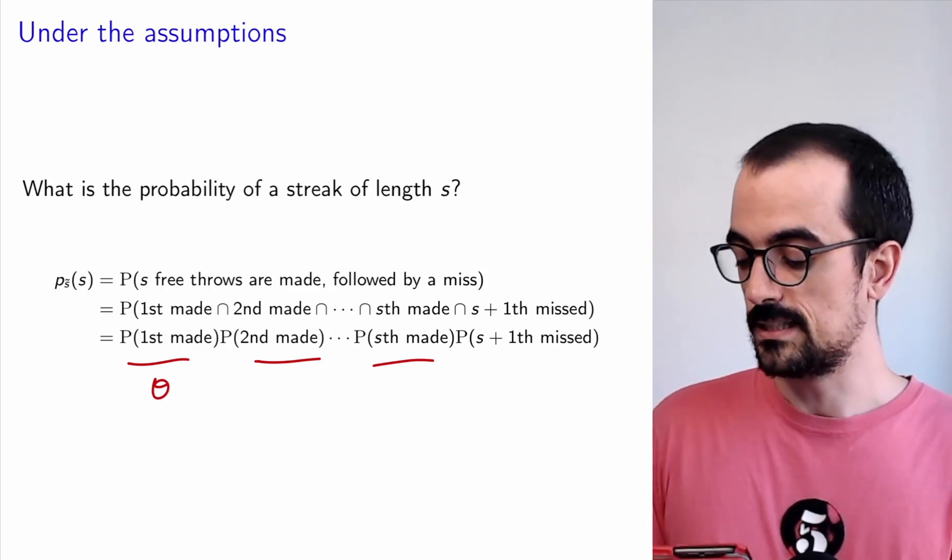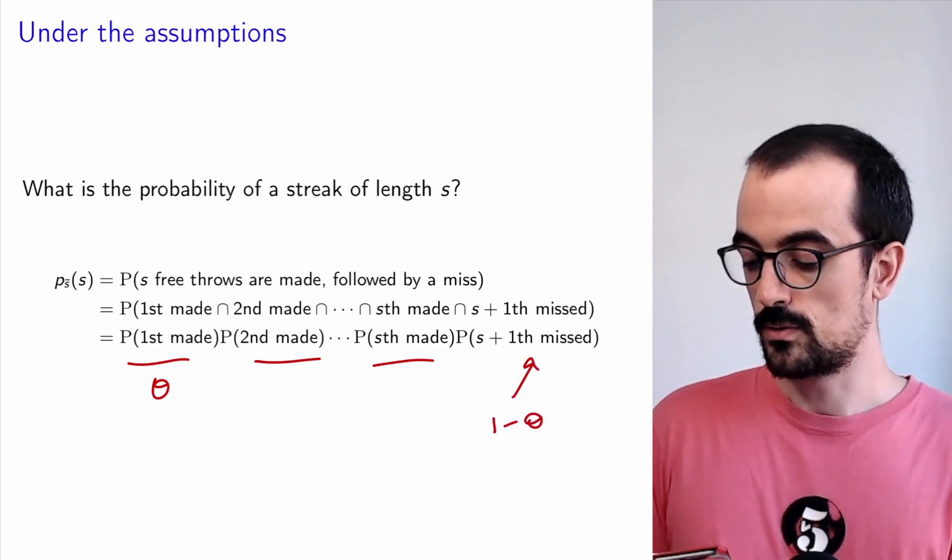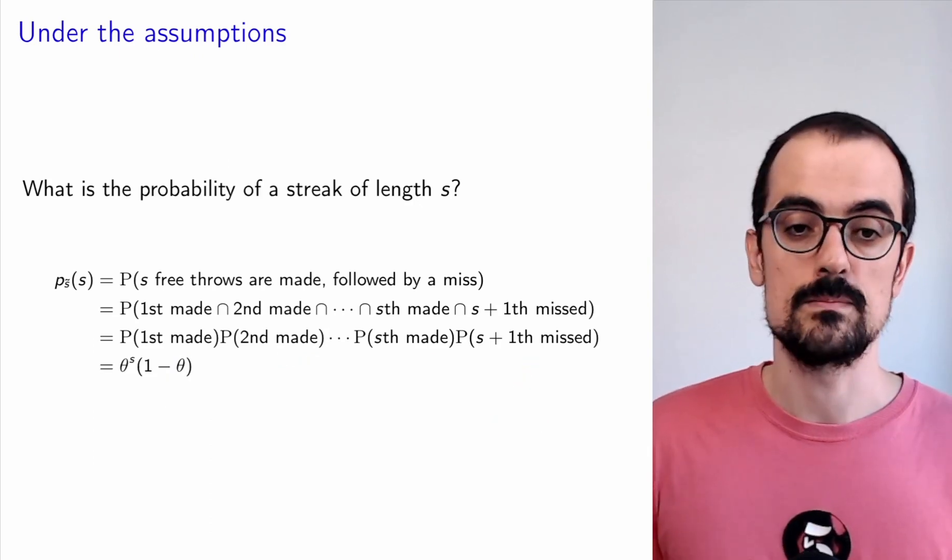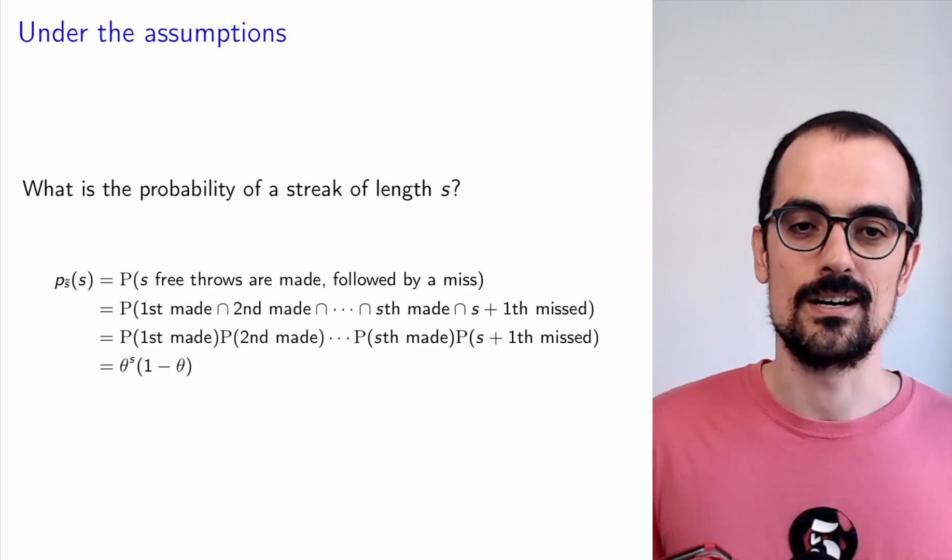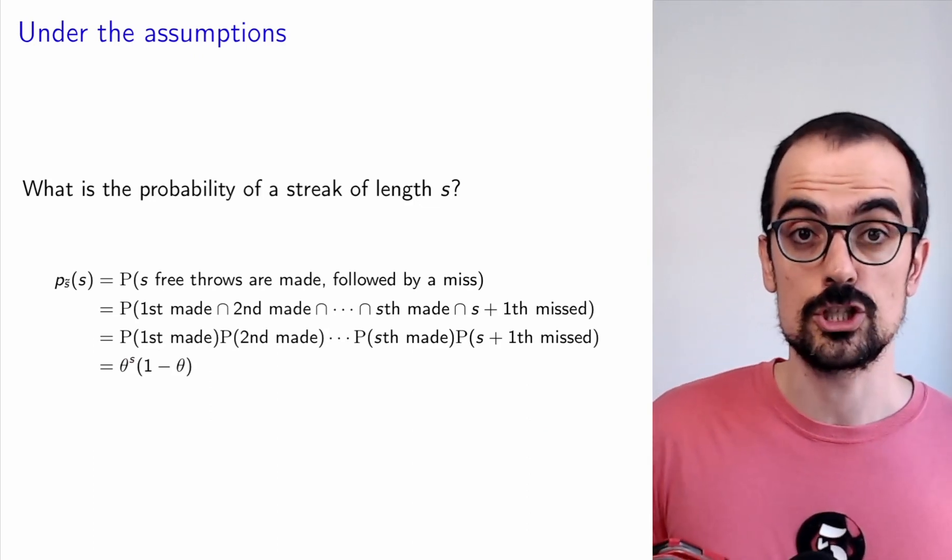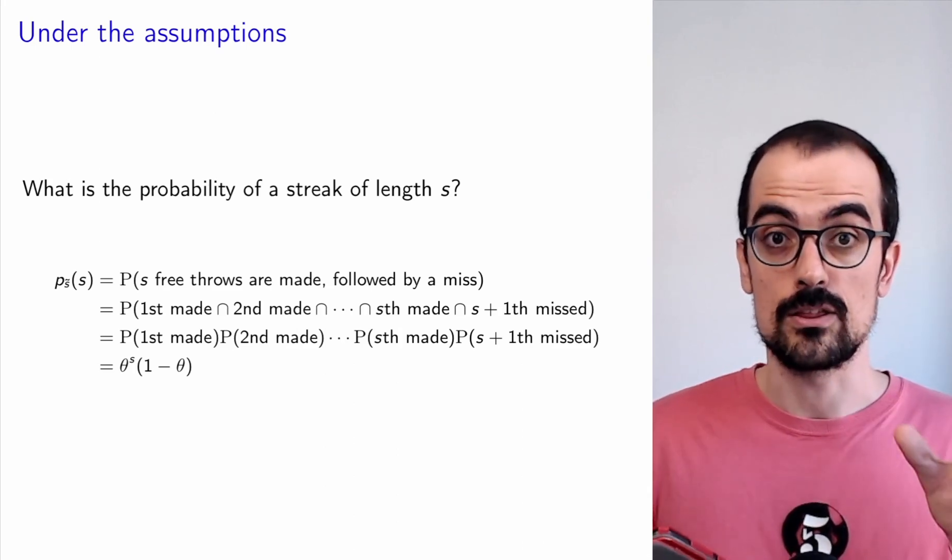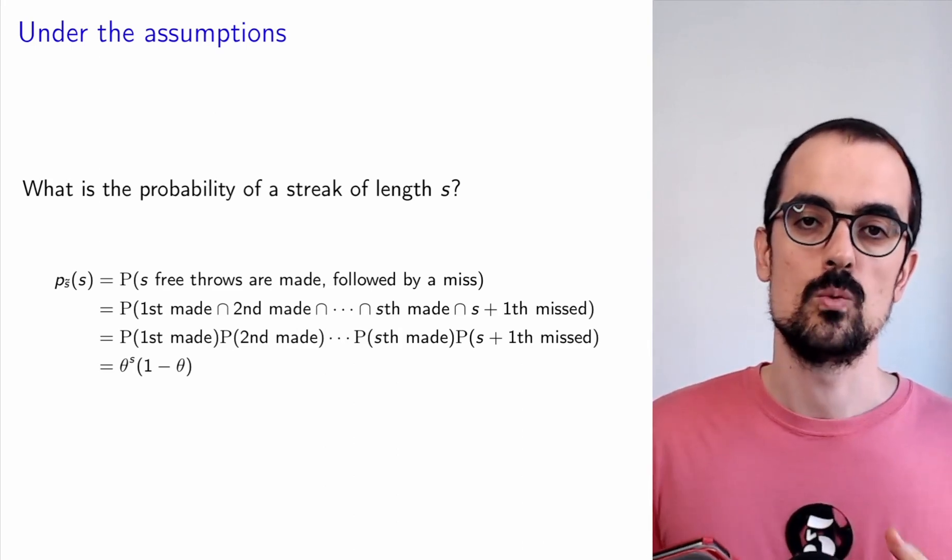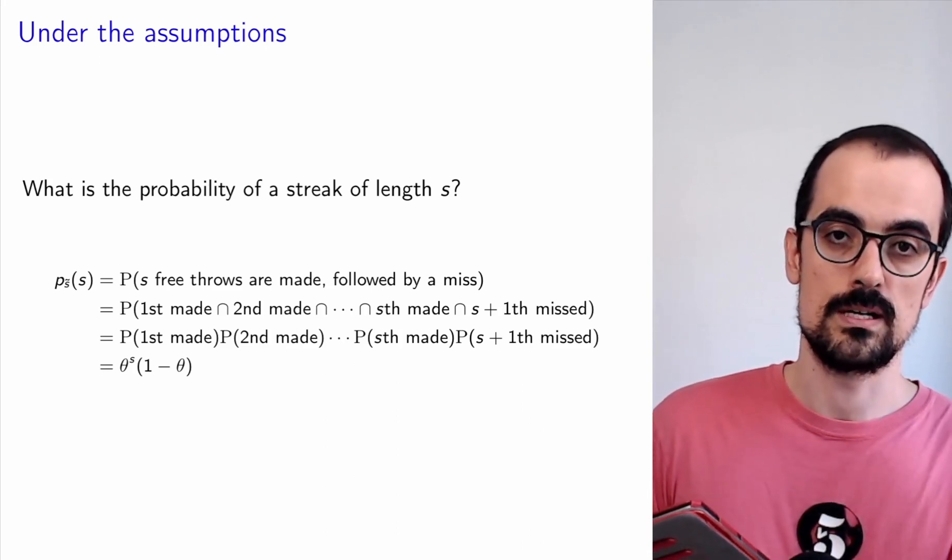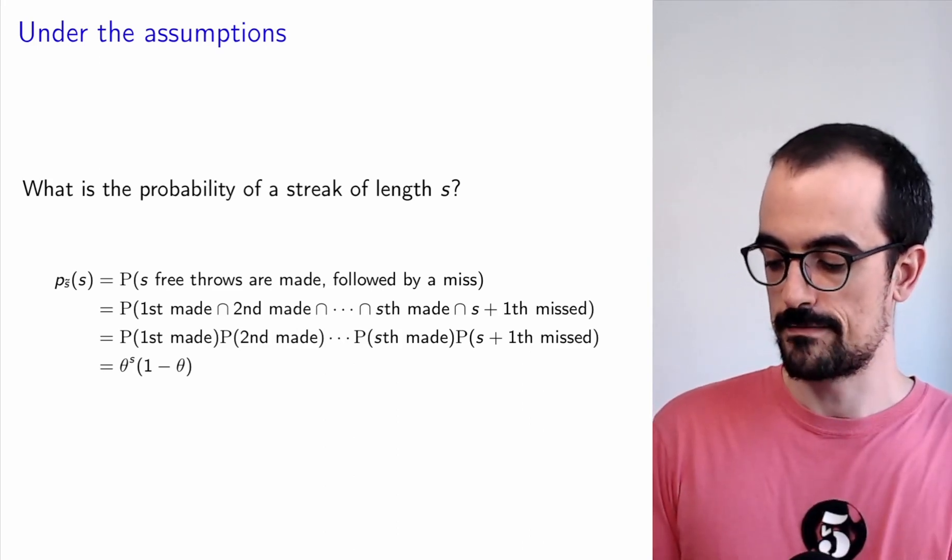And then this guy is one minus theta. So we have theta to the s times one minus theta. That is the PMF of our probabilistic model as a function of the length of the streak s. You can check on your own that it adds up to one when you sum this from zero to infinity, so it's a valid PMF.